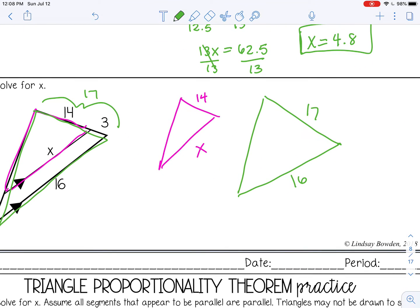So I can set up my proportion. I can do x over 16 equals 14 over 17. So that would be 17x equals 224, and then divide by 17. And you get, I'm going to round to the tenths place, so 13.2.